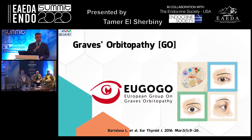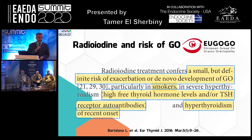We are going to review Graves' orbitopathy. The recommendations come from what we call the European Group on Graves' Orbitopathy — EUGOGO — which has two versions of their guidelines, the second published in 2016. We can use glucocorticoids either for prophylaxis against Graves' orbitopathy or for the treatment of Graves' orbitopathy.